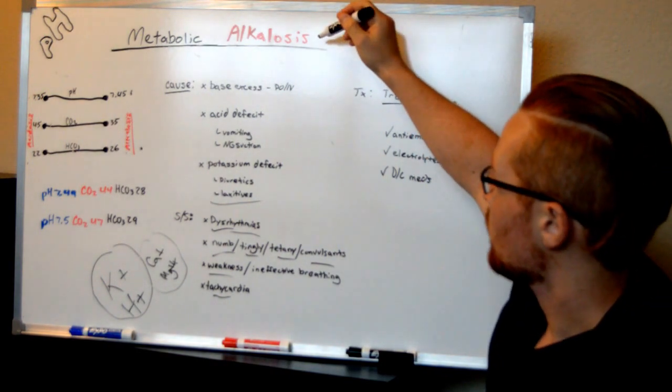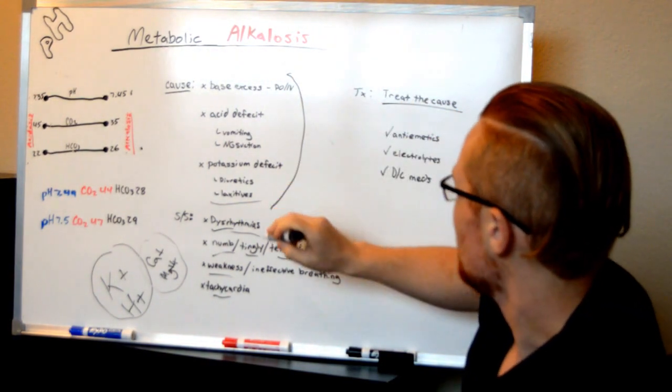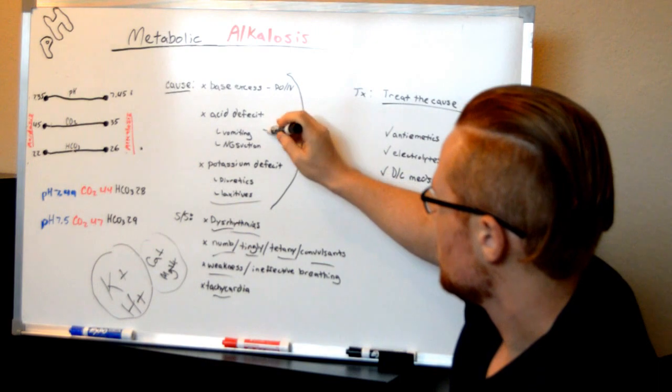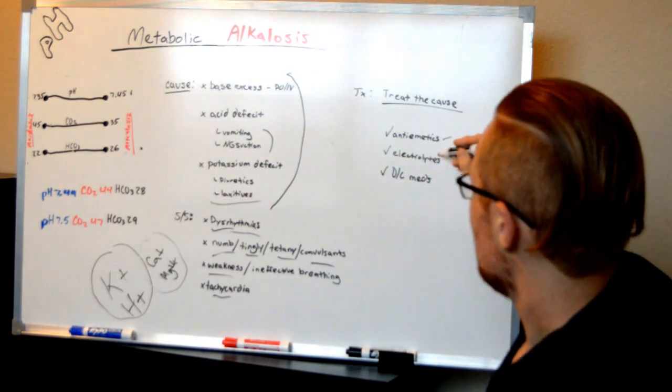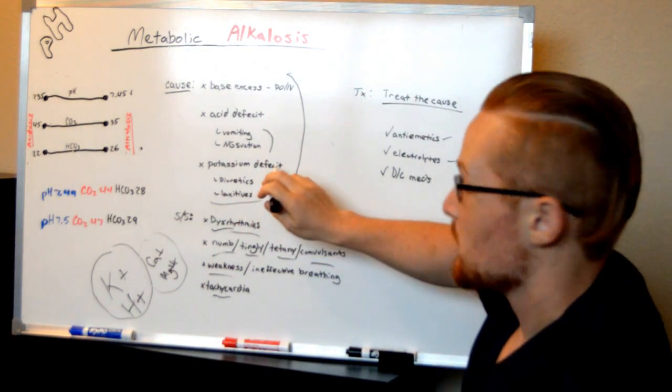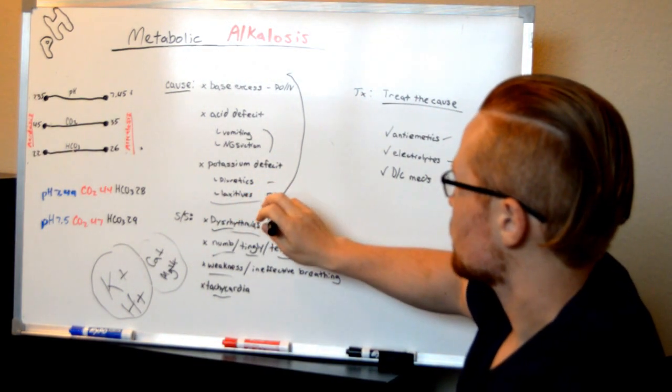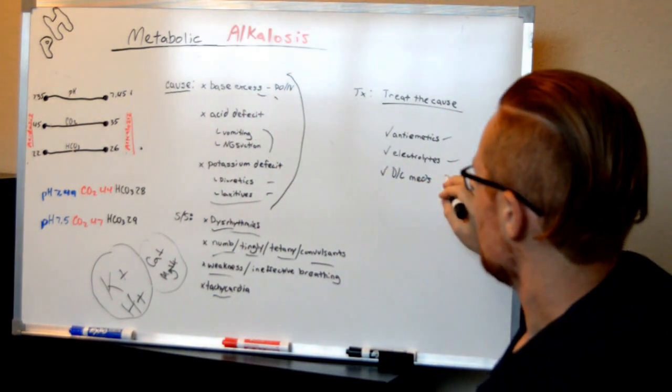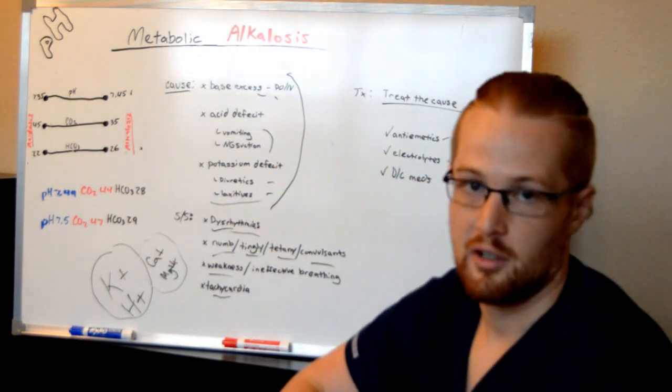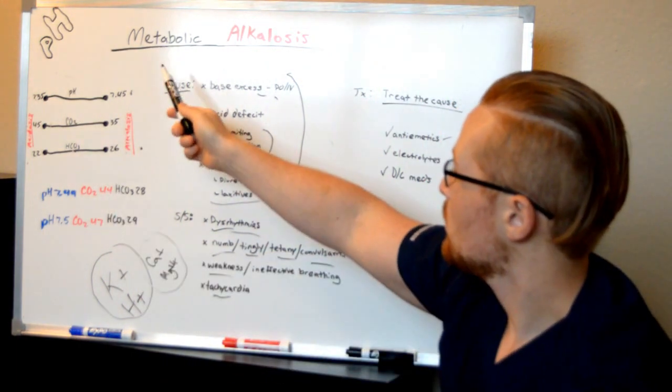Treatment for metabolic alkalosis: figure out the cause and treat it. If they're vomiting, give antiemetics. If potassium levels are low, give electrolytes. If potassium is low from diuretics or laxatives, or if base is excess from certain medications, you might need to discontinue some medicines. So this is metabolic alkalosis.